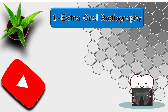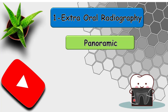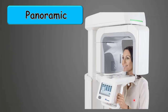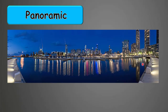The extraoral radiography we're going to talk about is the panoramic radiography, also called the OPG, which stands for orthopantomogram. We'll also talk about the CBCT scan, which is a sectional radiography. The most common extraoral radiography used in dentistry is the panoramic radiography. The film is outside of the mouth, and the panoramic film gives you a full view of both jaws.